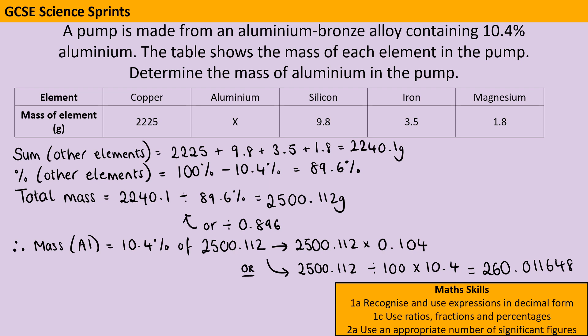Finally, I need to think about how precise should my answer be. Looking at the data given in the question, I'm always looking for the least precise piece of data, because you can't be more precise in your answer than the least precise piece of data. Here silicon, iron, and magnesium are all given to two significant figures, so I should give my answer to two significant figures, and that's going to be 260 grams.